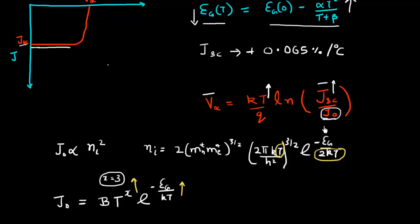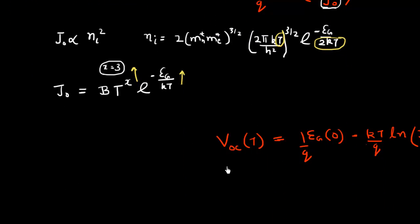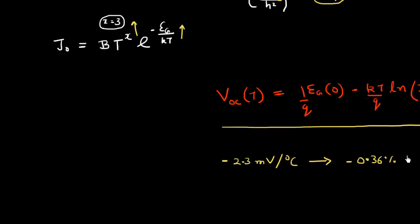As a result of J₀ increasing, my VOC, which contains J₀, has a particular temperature dependence. Plugging in the expression for J₀ into the VOC relationship gives a temperature dependence where VOC decreases as a function of temperature. For silicon solar cells, VOC decreases by approximately 2.3 millivolts for every degree increase in temperature, which translates to approximately a reduction of 0.36% in VOC per degree centigrade.